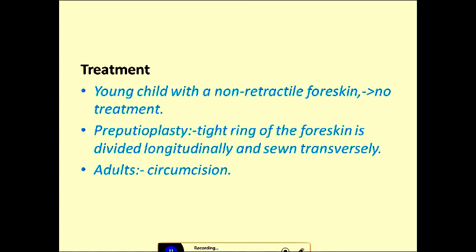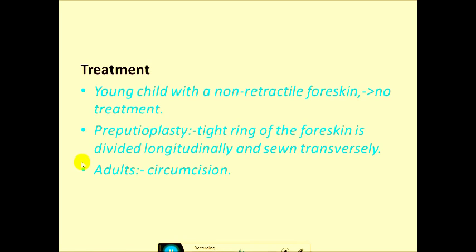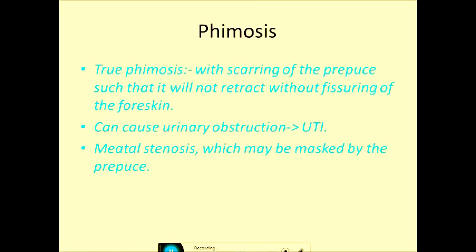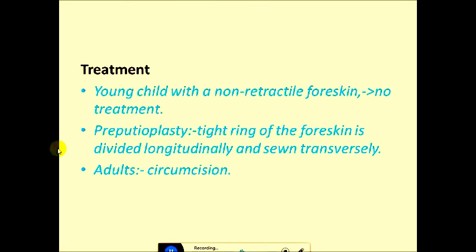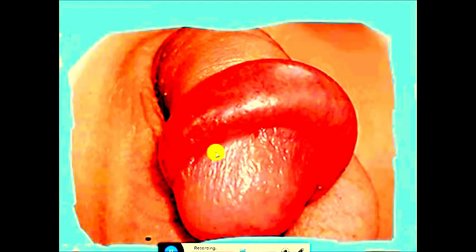Treatment: a young child with a non-retractile foreskin requires no treatment. In older patients, preputioplasty can be performed — the tightened foreskin is incised longitudinally and sutured vertically, allowing retraction of the prepuce and exposing the glans. In adults, the treatment is circumcision.